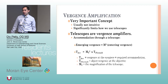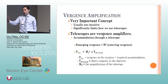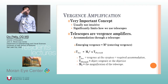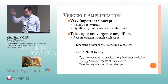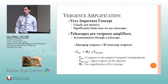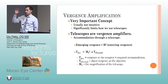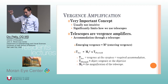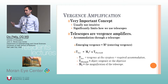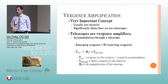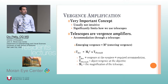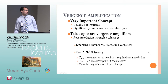Bioptic users mostly look through their regular glasses and take a quick peek through the bioptic to read a street sign or check a traffic light — they're not driving while looking through it constantly. Testing involves showing them a 20/40 letter through regular glasses and having them quickly peek through the bioptic to identify it, checking if they can do it efficiently. Bioptics are legal in Ohio and a few other states, but not in Utah.